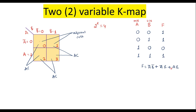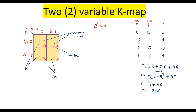Now let me simplify this expression using Boolean laws. It is a canonical minterm or canonical SOP expression. A-bar is common between the first two terms, so F = A-bar·(B-bar + B) + A·B. Since B + B-bar equals 1, this gives A-bar·1 + A·B, which is A-bar + A·B. Applying the distributive law: F = (A-bar + A)·(A-bar + B) = 1·(A-bar + B) = A-bar + B. This is the final simplified expression.